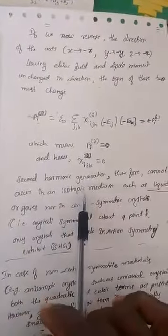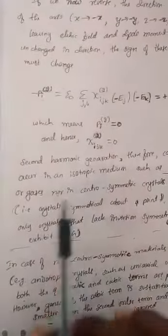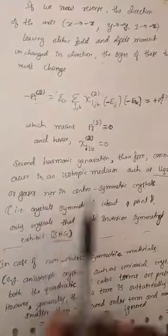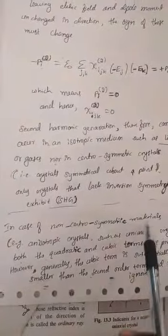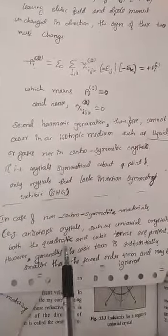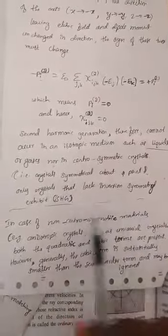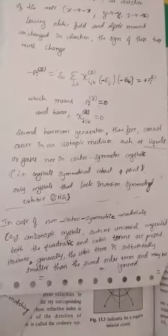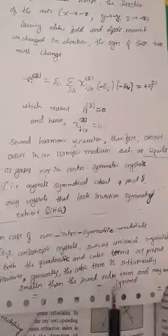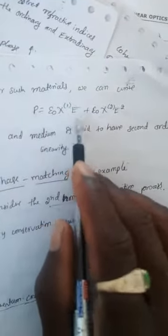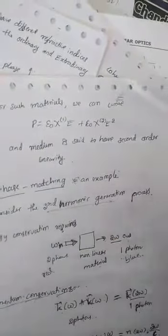Therefore, second harmonic generation cannot occur in an isotropic medium such as liquids or gases, nor in a centrosymmetric crystal — that is, a crystal symmetric about a point. Only in crystals that lack inversion symmetry can second harmonic generation occur. In non-centrosymmetric materials, both quadratic and cubic terms are present, but the cubic term is substantially smaller than the second order term and may be ignored. So we write P = ε₀(χ¹E + χ²E²), and the medium is said to have second order nonlinearity.